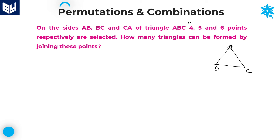So on side AB there are 4 points, on side BC there are 5 points, and on side CA there are 6 points. The question is: how many triangles can be formed by joining these points?